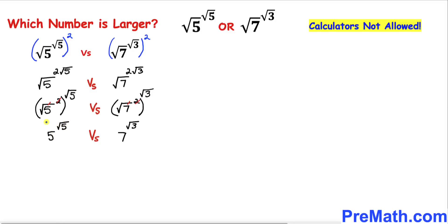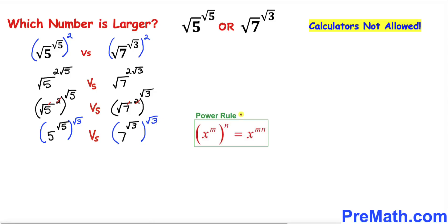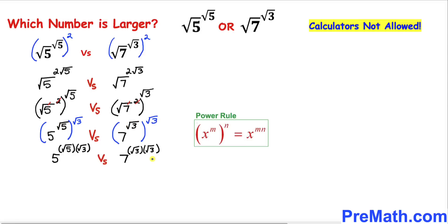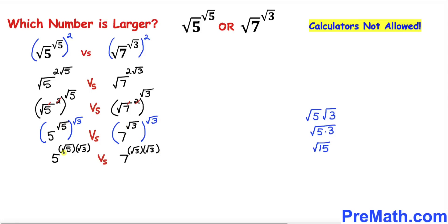In this next step we are going to take the power square root of 3 on this side, and likewise on the right hand side as well. Now let's recall this power rule once again — according to this rule we are going to multiply out these nested exponents on both sides. And now square root of 5 times square root of 3 could be written as square root of 15, so therefore this number is going to become 5 raised to the power square root of 15.